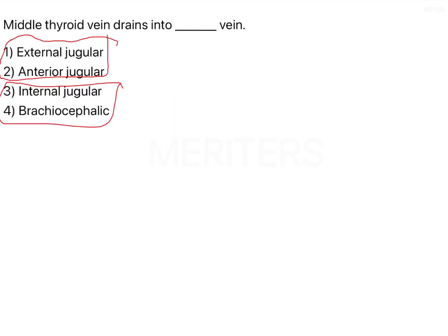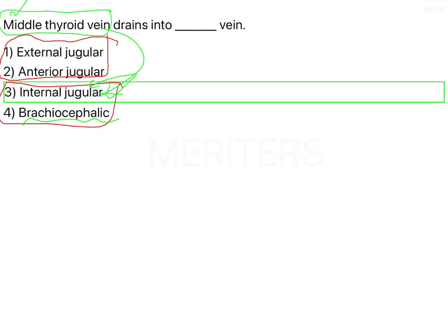Remember: the middle thyroid vein drains into the internal jugular vein, and the superior thyroid vein also drains into the internal jugular vein. However, the inferior thyroid vein drains into the brachiocephalic vein. Since we are asked about the middle thyroid vein, we select option three — internal jugular vein.